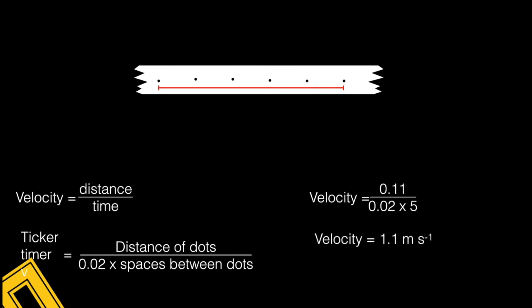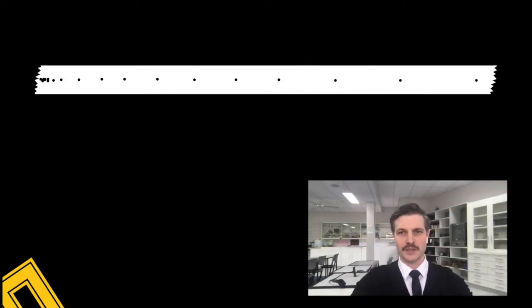So how are we going to measure acceleration? Well, hopefully your ticker timer tape looks something like this—it's probably going to be a bit longer. But I can see just by looking at it that my intervals at the start are a lot shorter than they are at the end, so clearly I've had some sort of acceleration here.